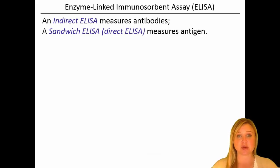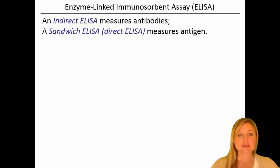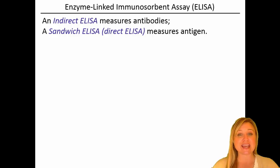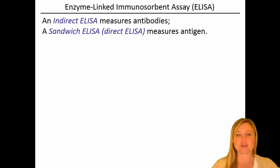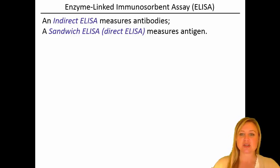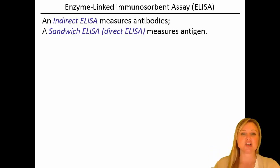An indirect ELISA measures antibodies. We can also measure antigen using ELISA just by modifying the assay a little bit. When we're measuring the antigen itself, we call that a sandwich ELISA, or a direct ELISA, because we're looking directly for the antigen — not for antibodies against the antigen. We call it a sandwich ELISA because we make a little antigen sandwich, where the meat is the antigen and the bread is made of antibodies.